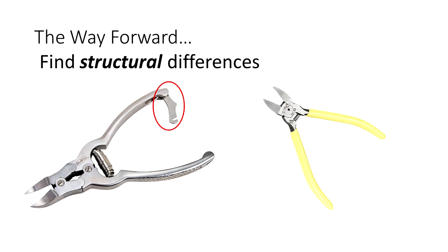So let's look and see what structural differences we have. For one, we have this latch that can be used to secure the clippers in a compressed position, with the handles close together — the wire cutter does not have that. But more interesting is this dual pivot design. As you can see where the two screws are, there are actually two pivot points in this mechanism, and the wire cutter device on the right does not have that.